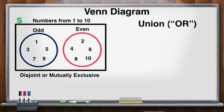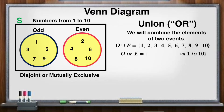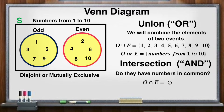For the union of two events, we commonly use 'or.' Let's say, odd or even. Look at the shaded region — this emphasizes that we need to combine the elements of two events. So the union of O and E are the elements from 1 up to 10. For the intersection, we commonly use 'and.' Look at the given Venn diagram. Do they have numbers in common? No, they don't. That's why the intersection of O and E is null — O and E has no element.